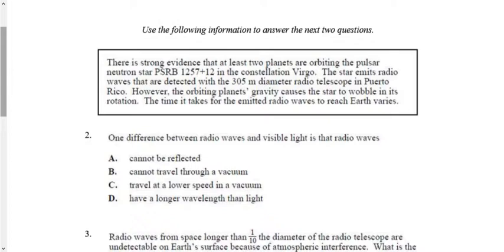All right. Number two talks about evidence of two planets orbiting a pulsar neutron. The star emits radio waves that are detected by a 305 meter diameter radio telescope. What's the difference between radio waves and visible light? Well, they should both be reflected, right? Well, they can both travel through a vacuum because they're both EMR. Well, no, they both travel at the same speed, right? Well, it must be D, but let's just double check that. Radio waves, visible light. Radio waves, microwaves, infrared, visible light, ultraviolet, x-rays, and gamma rays. We would say that radio waves have a lower frequency than visible light or a higher wavelength than visible light. So, D is, in fact, our answer there.